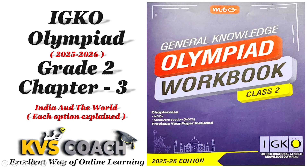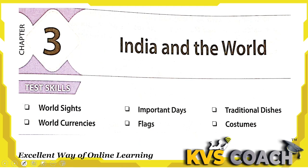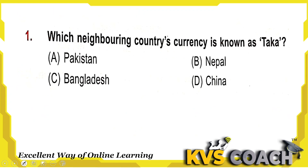Hello my dear kids, now we are going to start chapter 3 from your IGQ Olympiad workbook and the chapter name is India and the World. So let's start — in this chapter we are going to discuss world sites, important days, traditional dishes, world currencies, flags and costumes.